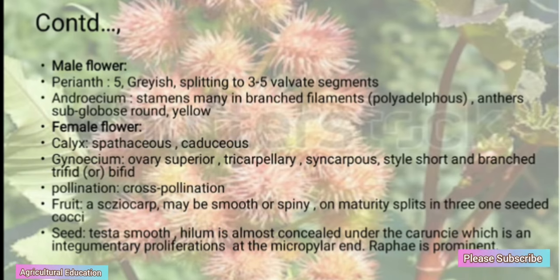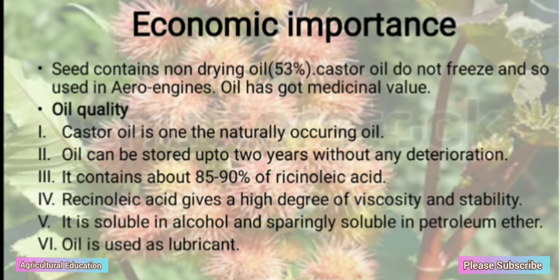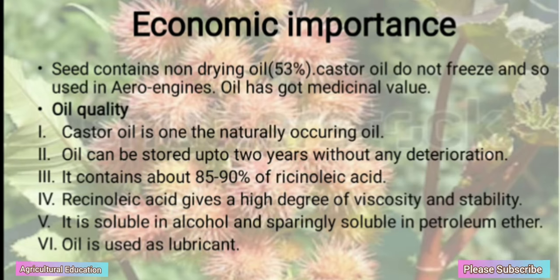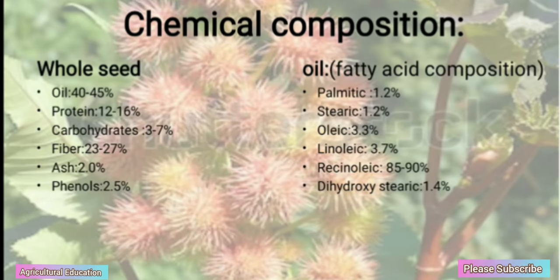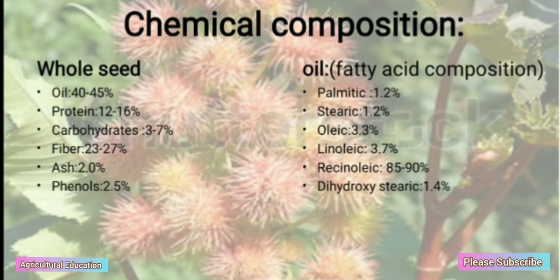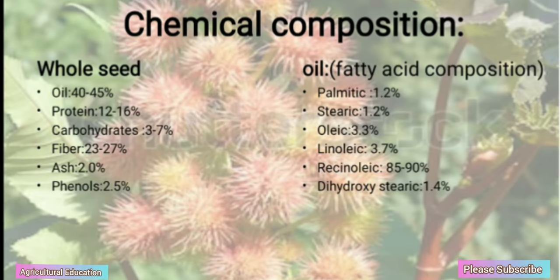Economic Importance — Oil Quality: Castor oil is one of the naturally occurring oils. Oil can be stored up to 2 years without any deterioration. It contains about 85-90% of ricinoleic acid. Oil is used as a lubricant. It is soluble in alcohol and sparingly soluble in petroleum ether. Chemical Composition — Whole Seed: Oil 40-45%, Protein 12-16%, Carbohydrate 3-7%, Fiber 23-27%, Ash 2.0%, Phenols 2.5%. It also contains oil fatty acid composition.